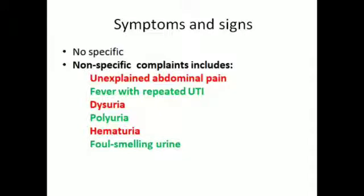Signs and symptoms of urethrocele: no specific signs or symptoms are present. However, non-specific complaints include unexplained abdominal pain, fever with repeated UTI, dysuria, polyuria, hematuria, and sometimes foul-smelling urination.